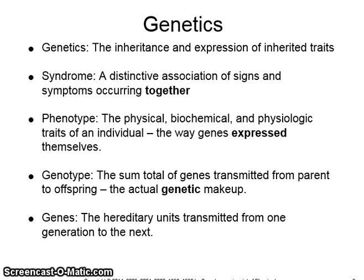The genotype is the sum total of genes transmitted from parent to offspring, which is the actual genetic makeup. So a person with a brown-eyed parent and a blue-eyed parent genotypically would have both the brown and blue eye genes, but phenotypically would have brown eyes because brown eyes are dominant.